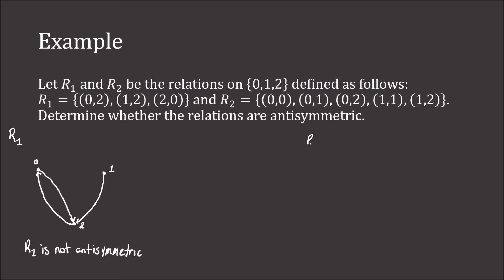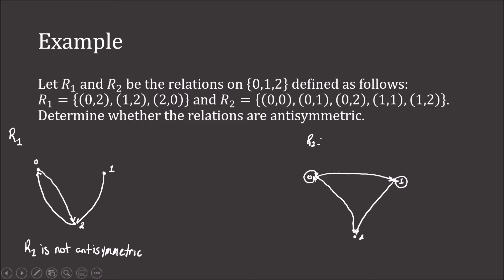Looking at the directed graph for R2, we again plot three points: 0, 1, and 2. We have 0 goes to 0, 0 goes to 1, 0 goes to 2, 1 goes to 1, and 1 goes to 2. We can see that 0 goes to 1 but 1 doesn't go back; 1 goes to 2 but 2 doesn't go back; 0 goes to 2 but 2 doesn't go back. So R2 is anti-symmetric.